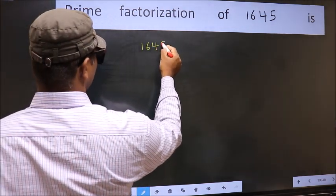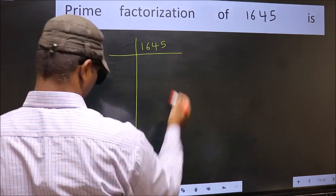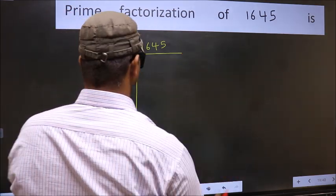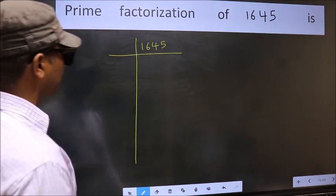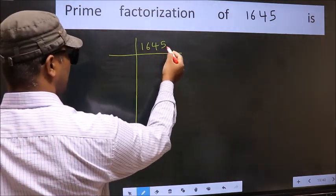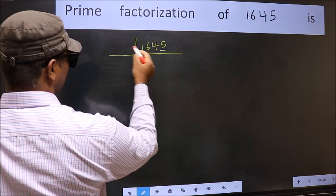1645. This is your step 1. Next, in this number, the last digit is 5, so take 5.